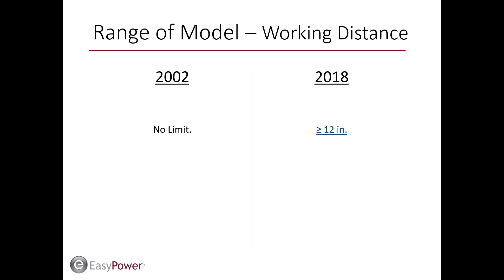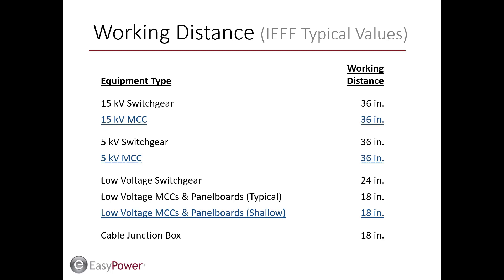The new standard now includes a minimum working distance of 12 inches as a limitation to the model range. Any smaller working distances could place a worker within the range of the actual arc plasma cloud, and the effect of direct contact with the plasma cloud is not considered in the arc flash model. Similar to the previous standard, IEEE provides typical working distances, with typical values equivalent to those from 2002 plus additional equipment types from the 2018 model.